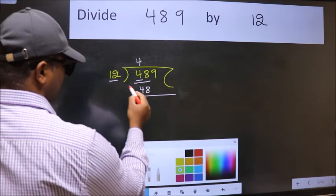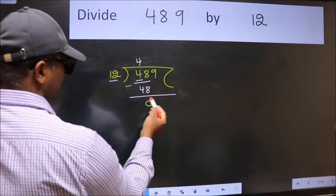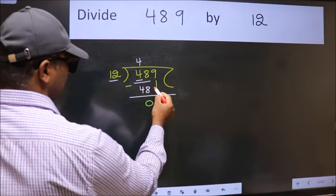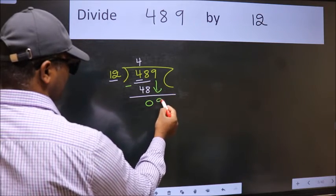Now we subtract and get 0. After this, bring down the next number. So, 9 down.